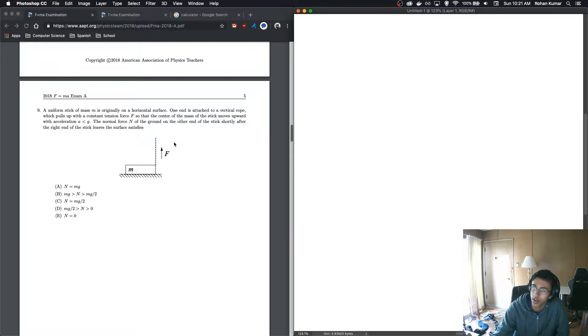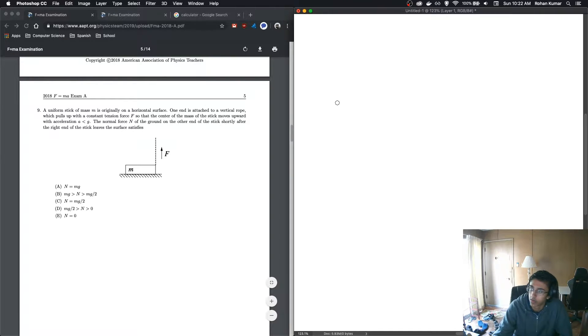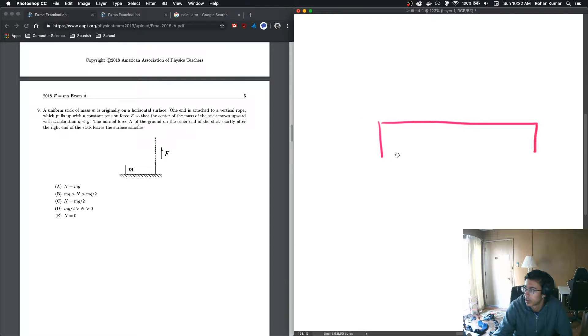Number 9. A uniform stick of mass M is originally on a horizontal surface. One end is attached to a vertical rope which pulls up with a constant tension force so that the center of mass of the stick moves upward with an acceleration A is less than G. The normal force on the ground on the other end of the stick, shortly after the right end of the stick leaves the surface, satisfies which of the following. So we have a mass M, we have a force F, and we want to find the force N over here.